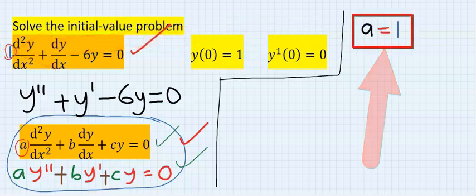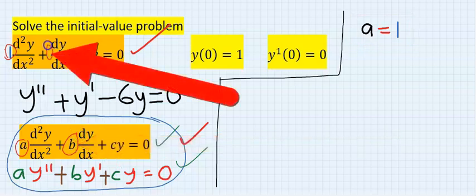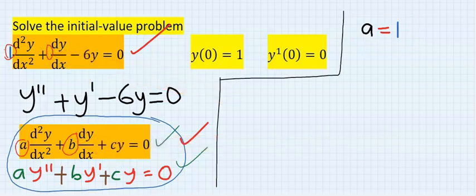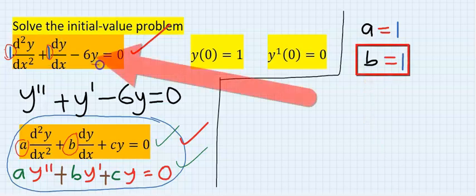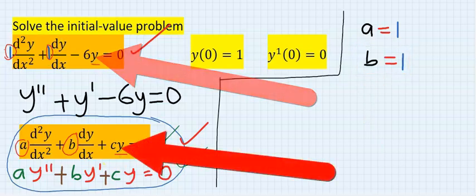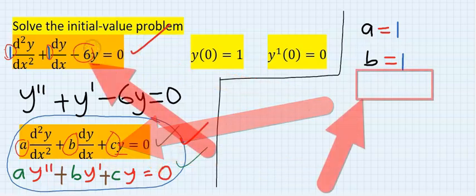Similarly, from the standard form, b is here. Hence, b is also one, though not written. From the standard form, c is here. Hence, c is equal to minus six.